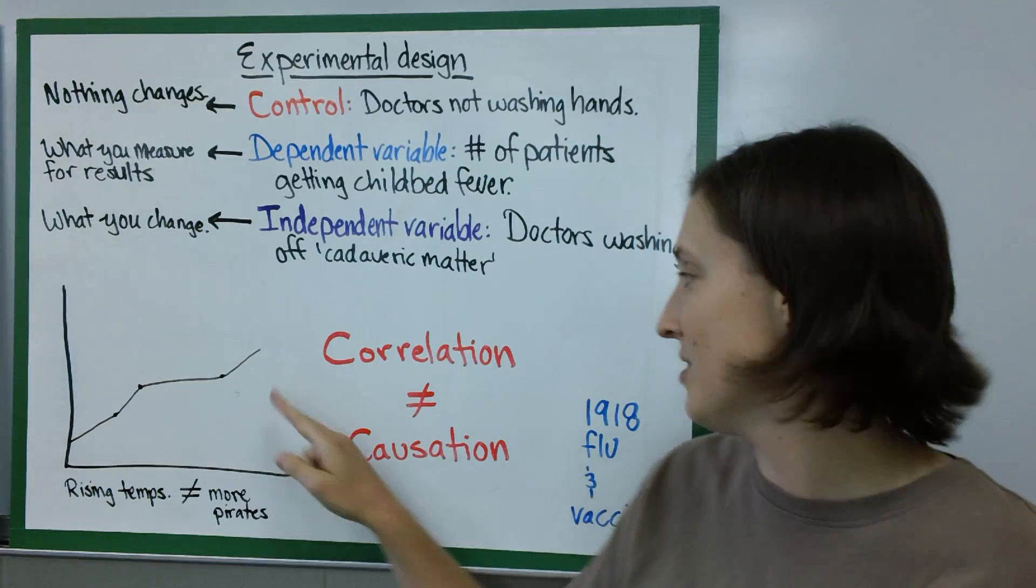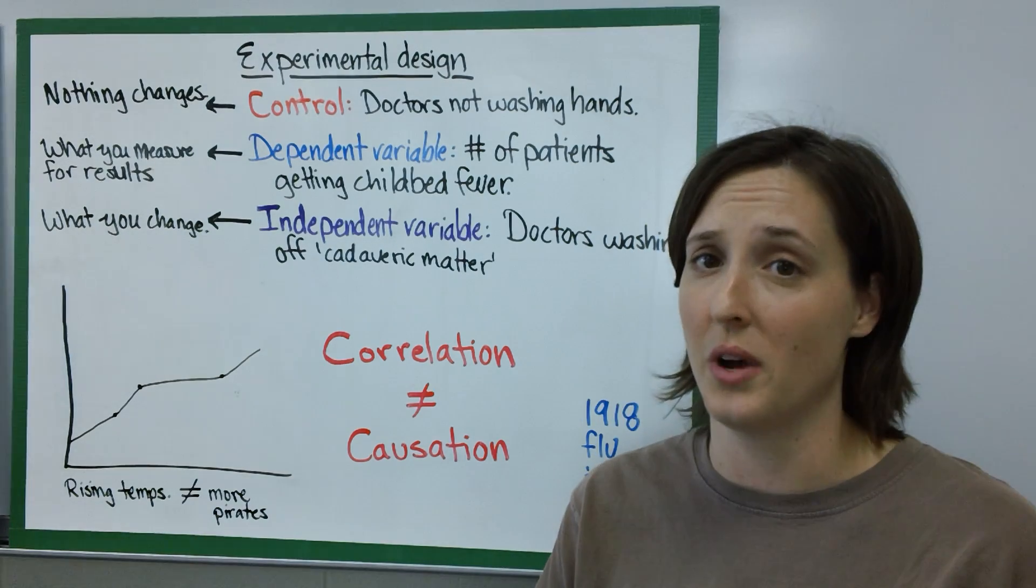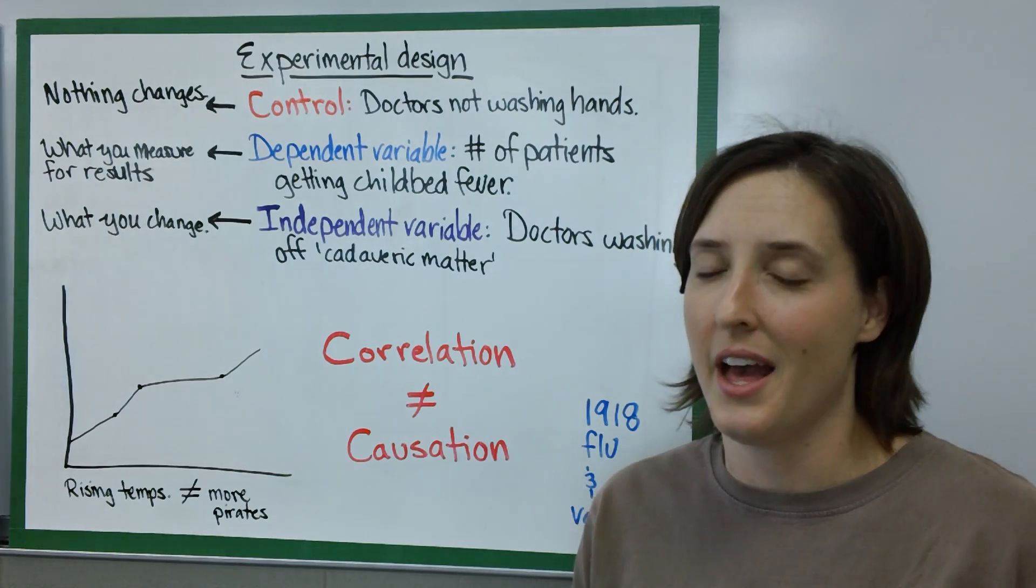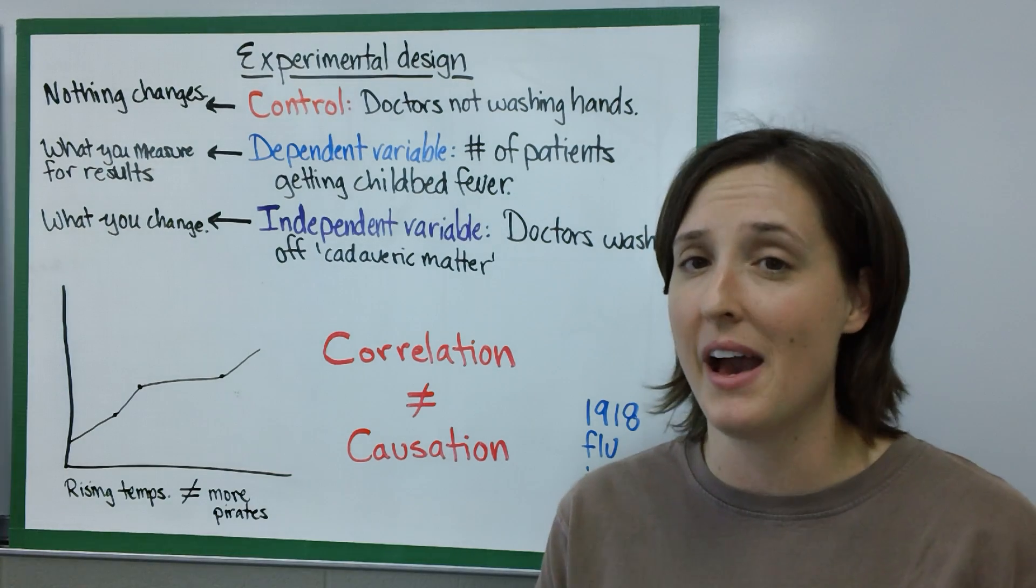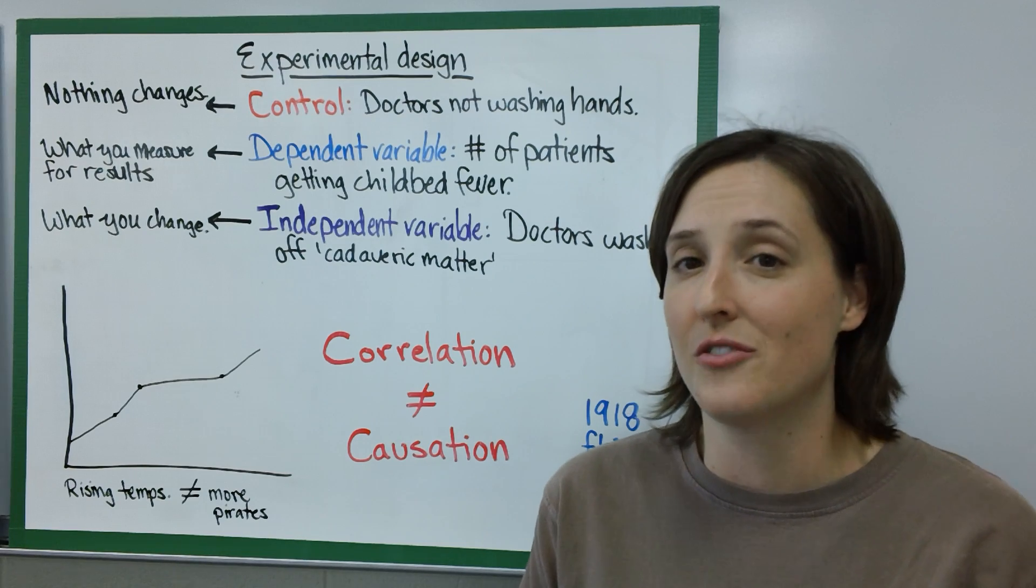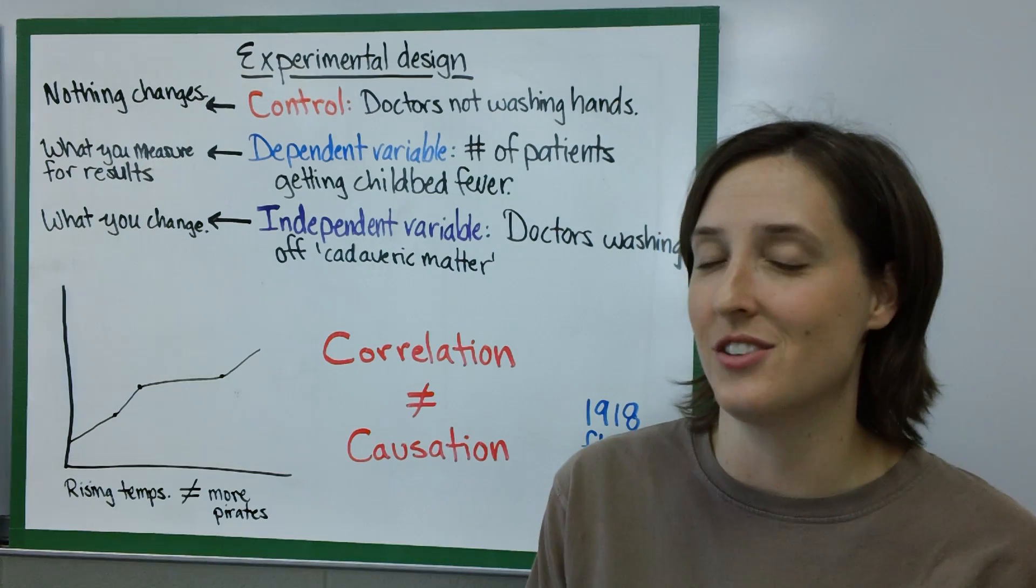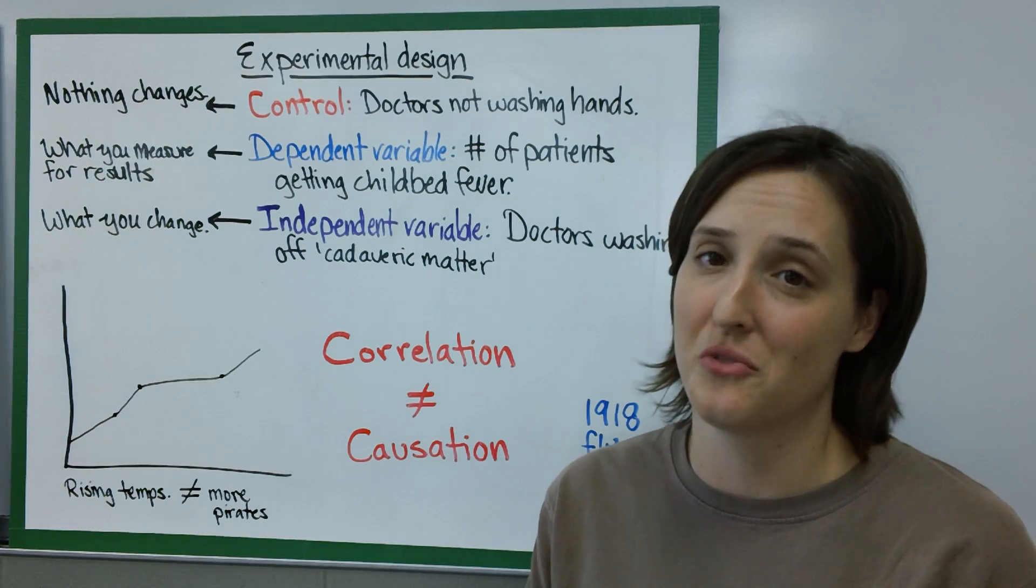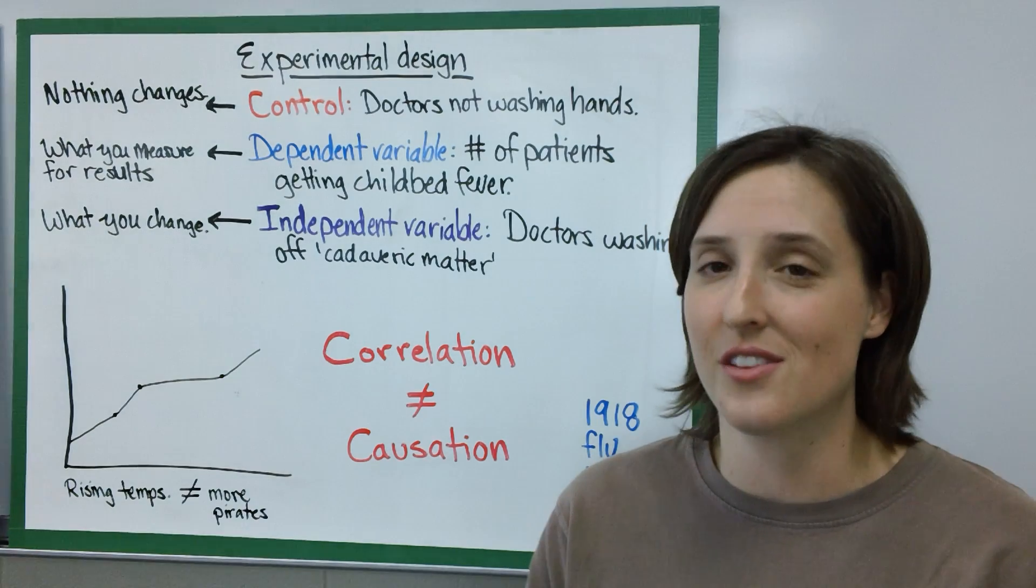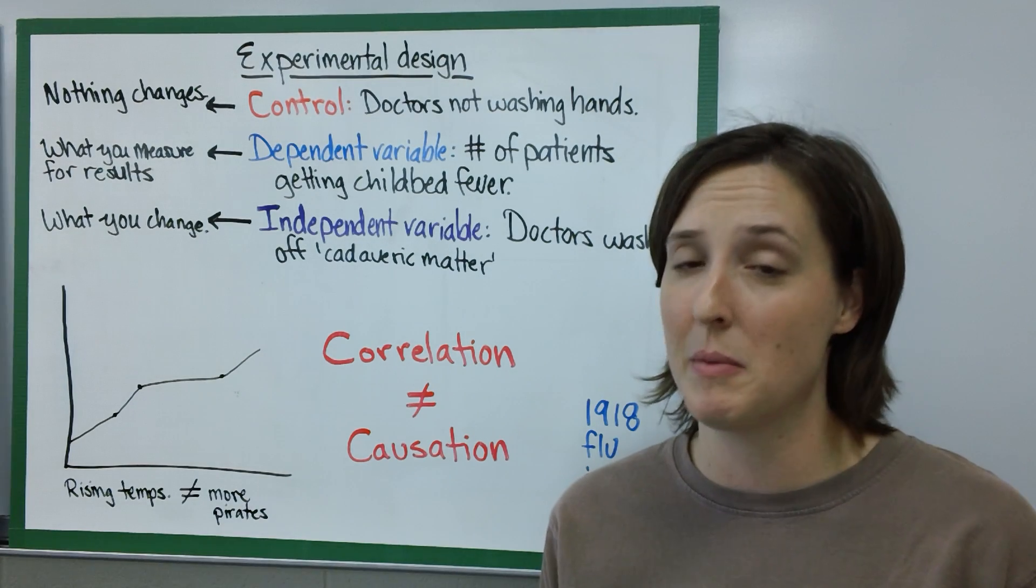Another good example is in 1918 there was a huge flu that killed like a third of the people on this planet and people were terrified of this coming back. So they gave everyone a vaccine and unfortunately some people started to die, and the drug companies were actually sued for this and they went to court. A huge lawsuit battle ensued.